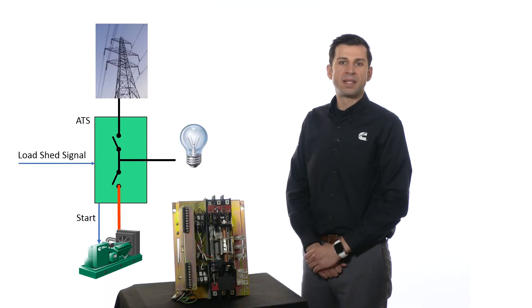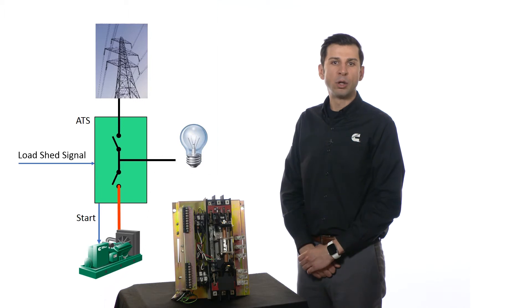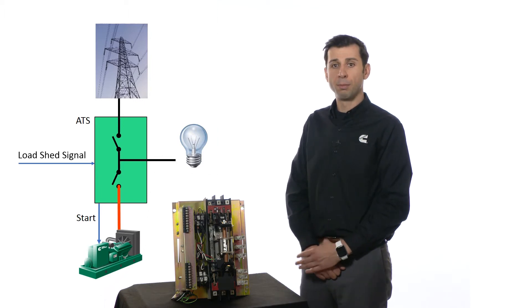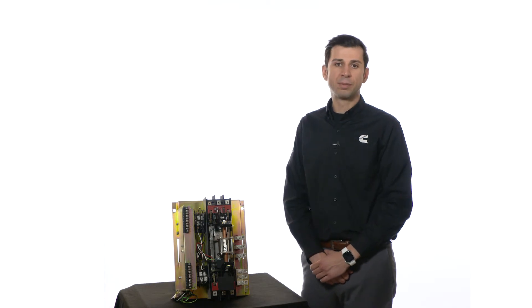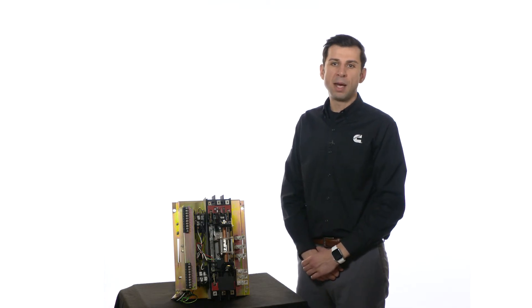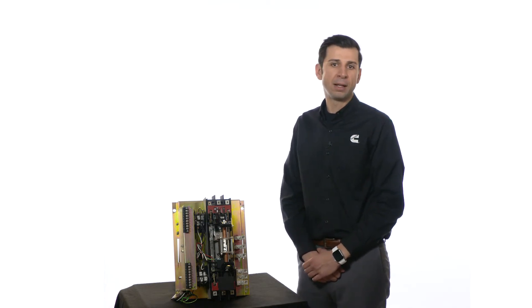The ATS remains in the center-off position until the overload condition is resolved, by an operator for example, and the load shed command is removed. When the load shed command is removed, the ATS moves back to the generator.